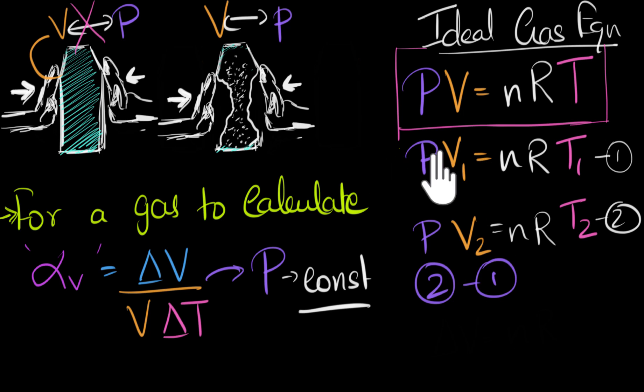So we'll do two minus one. On the left-hand side, P would be a constant, and you would have, in bracket, V2 minus V1, because we're subtracting. And V2 minus V1 is delta V. That's the change in volume. That would be equal to, on the right-hand side, nR. They are constants, they don't change, but in the bracket, we'd have T2 minus T1. That would be delta T.